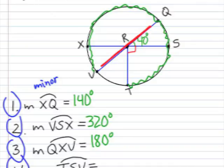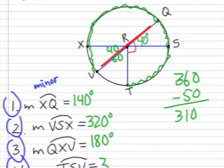So if this angle in here is 40, then this would have to be 50. Notice how it's the other part of the right angle. So we have 360, take away the 50 degrees, and that would give us 310. That major arc, TSV, is 310 degrees.